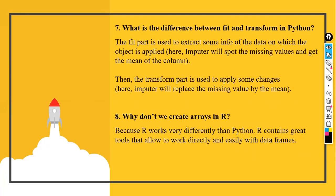What is the difference between fit and transform in Python? When you use fit, it is used to extract information from your data and apply it onto the object. When you use transform, it applies changes directly. The first extracts features and applies, while the second directly applies the changes. For example, the imputer will spot the missing values and get the mean — that's the fit step. Then, in the transform step, it replaces the missing values with the mean. It's a two-step process, simple and straightforward to understand.